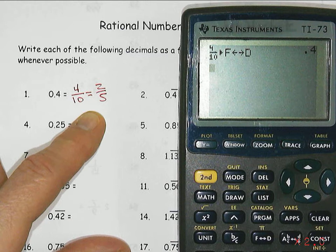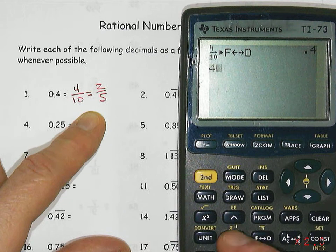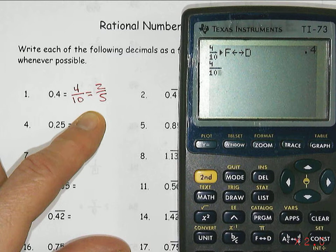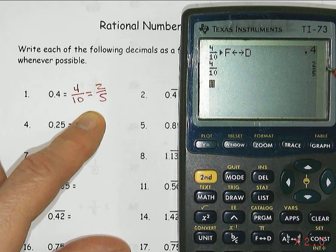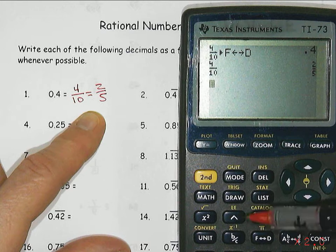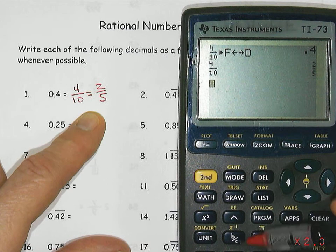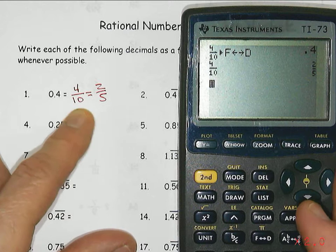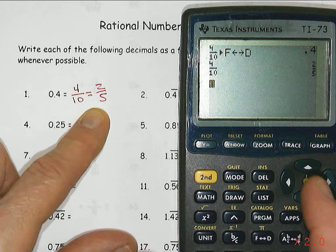If I just want to reduce the fraction and I put in four tenths and hit enter, then it will give me the reduced form, which is two fifths. So the fraction to decimal key and the B over C keys are helpful in doing this if I'm just changing these and want to simplify them.